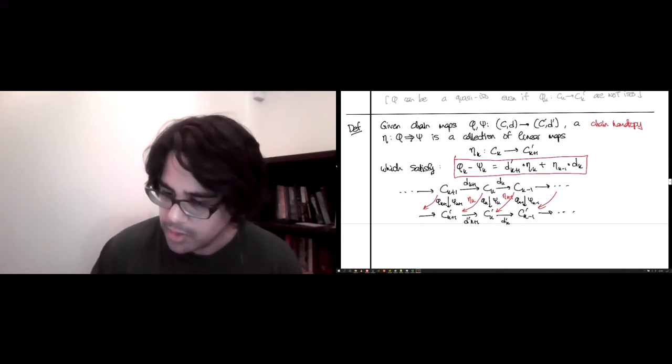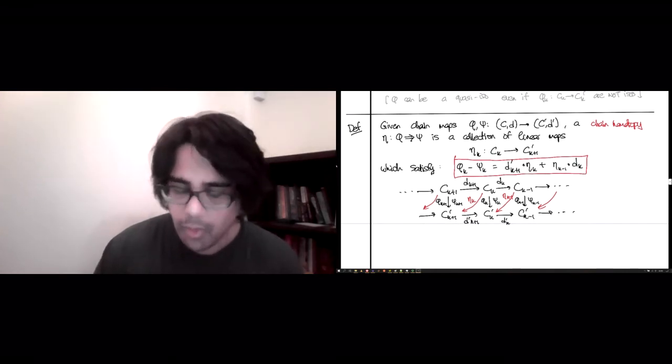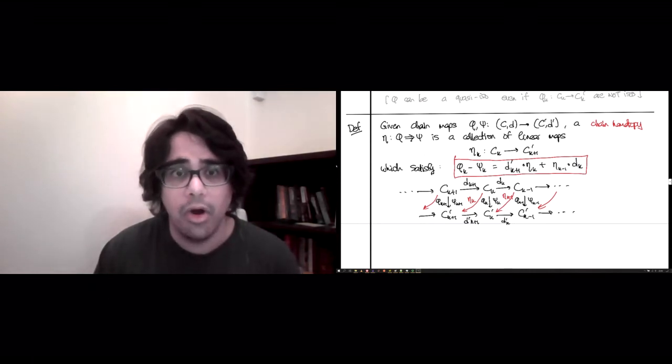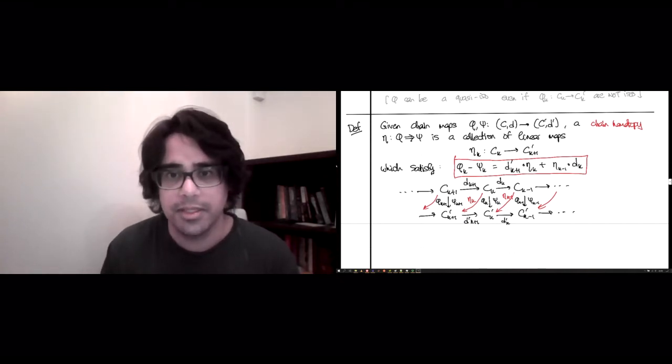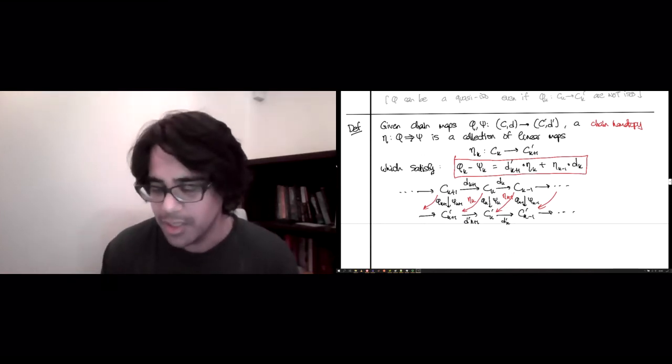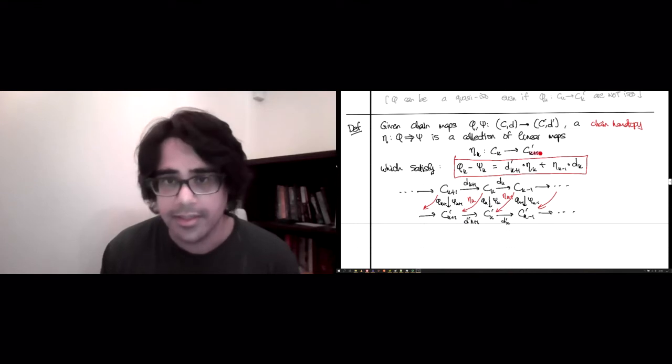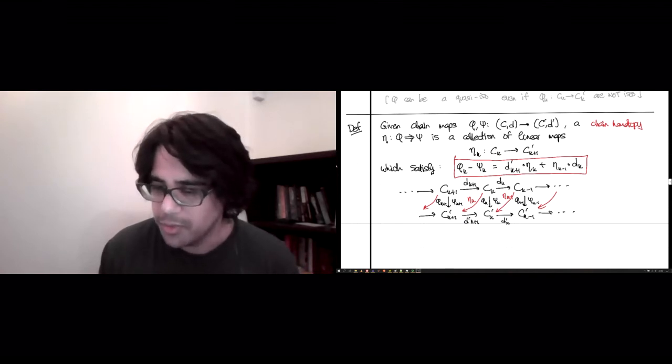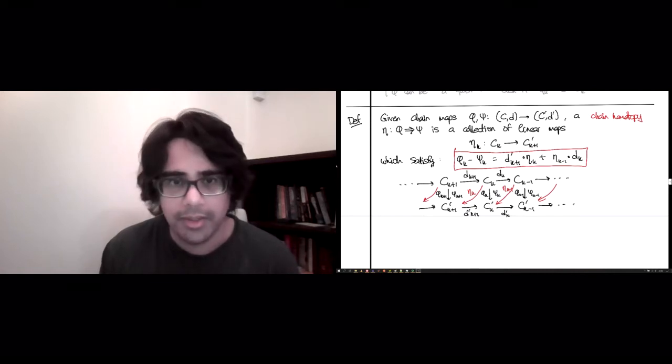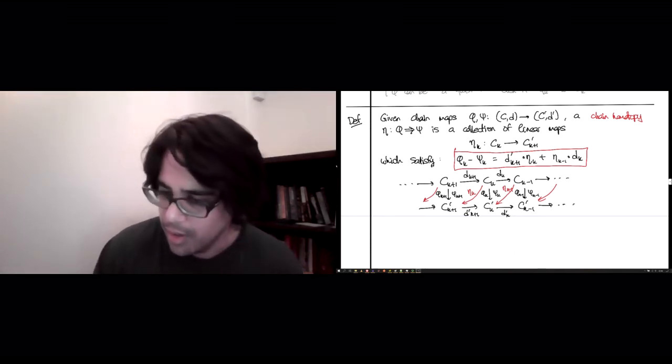So what's the point? The point is that this is playing the role that homotopy played in the land of continuous functions between topological spaces. Instead of a map from C cross [0,1] or something, you're mapping now that the crossing of the unit interval is all hidden in the indexing of this C'_{K+1} guy. Anyway, just a few bits of warnings about this is that it's not easy to find these, even when they exist.